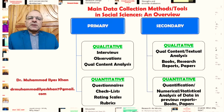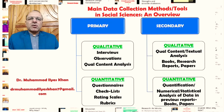The primary data collection tools used in quantitative studies include structured questionnaires, checklists, rating scales, and rubrics. All of these are structured instruments that are generally in tabular form or other structures, and their aim is to collect quantitative data in discrete or numerical form. These are the main primary data collection tools in quantitative studies.